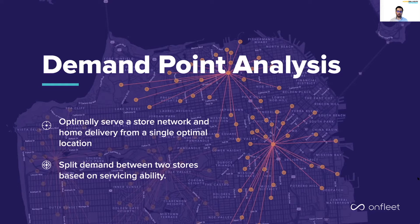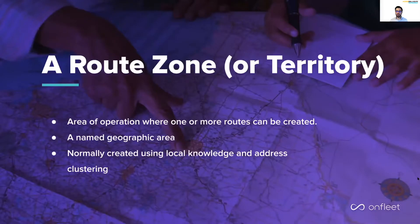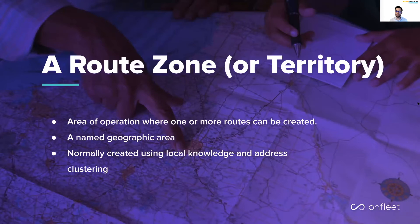This can all be performed using off-the-shelf GIS tools like Esri's ArcGIS. Before we get into the method, let's start with a little background on zones. A route zone or territory is an area of operation where one or more routes can be created. At a minimum, this is just a named geographic area. And historically, this is defined by a group of route engineers sitting around a map and drawing out based on collected local knowledge and experience.